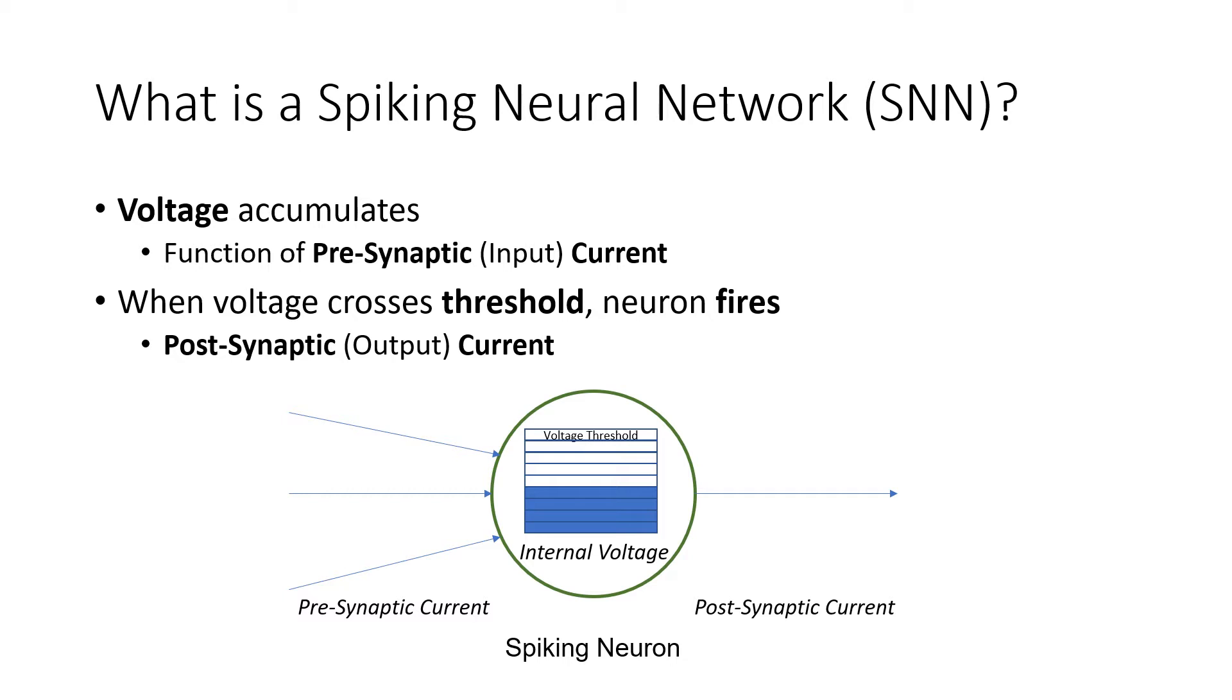Inside we have a building up voltage. When it reaches a threshold the neuron will fire, which means it presents one impulse to the post-synaptic current, which is its output. Sometimes this is one-to-one, sometimes there's a very large fan and it depends on how you set up your network.